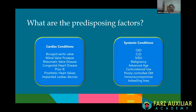What are the predisposing factors for infective endocarditis? Infective endocarditis can have either cardiac or non-cardiac predisposing factors. The cardiac conditions include bicuspid aortic valve, which is an innocuous condition but can be complicated by endocarditis, mitral valve prolapse, rheumatic valve disease — the incidence of which is decreasing — congenital heart disease, prior infective endocarditis, prosthetic valves, and implanted cardiac devices.